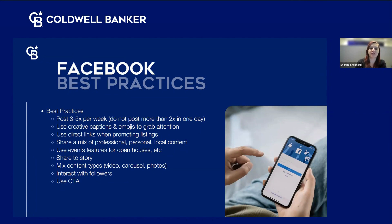When promoting listings, use direct links to those listings, not just to your website. People want to go exactly to that listing — if they have to search through your website, they'll close out frustrated. Share a mix of professional, personal, and local content. That goes along with know, like, and trust: personal content helps them get to know you, local expertise helps them like you, and professionalism helps them trust you. I recommend the law of thirds — a third personal, a third local, and a third professional.